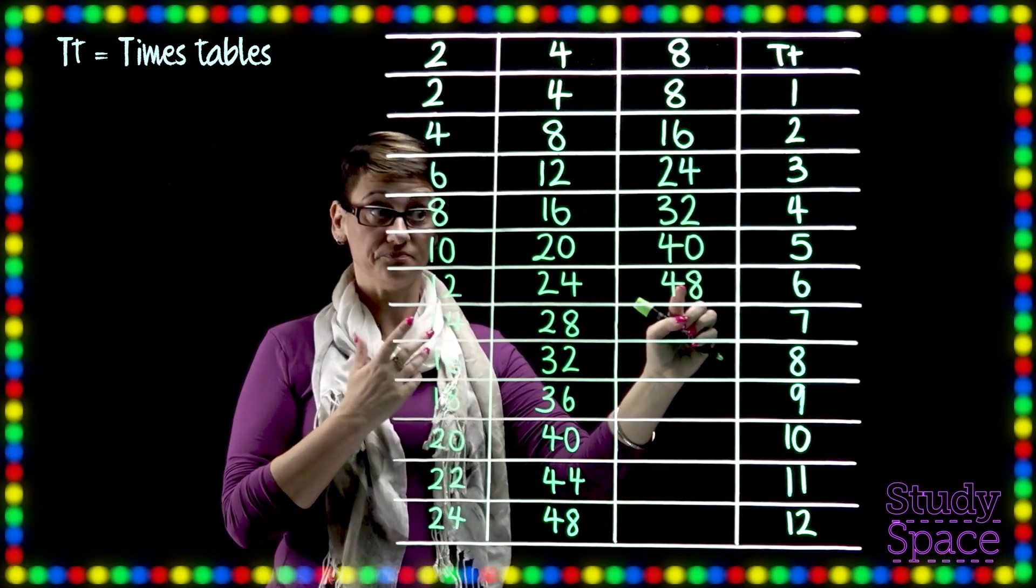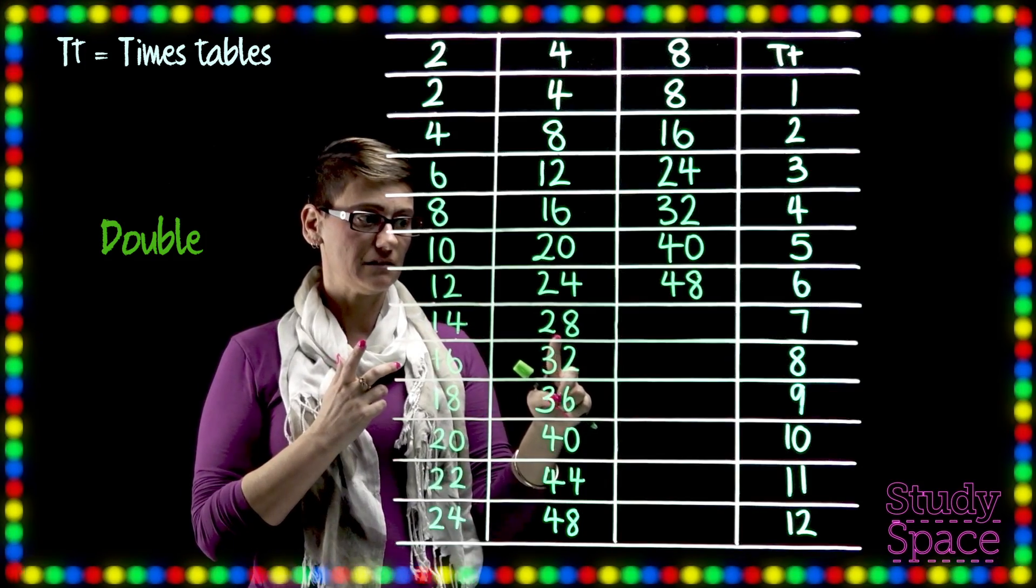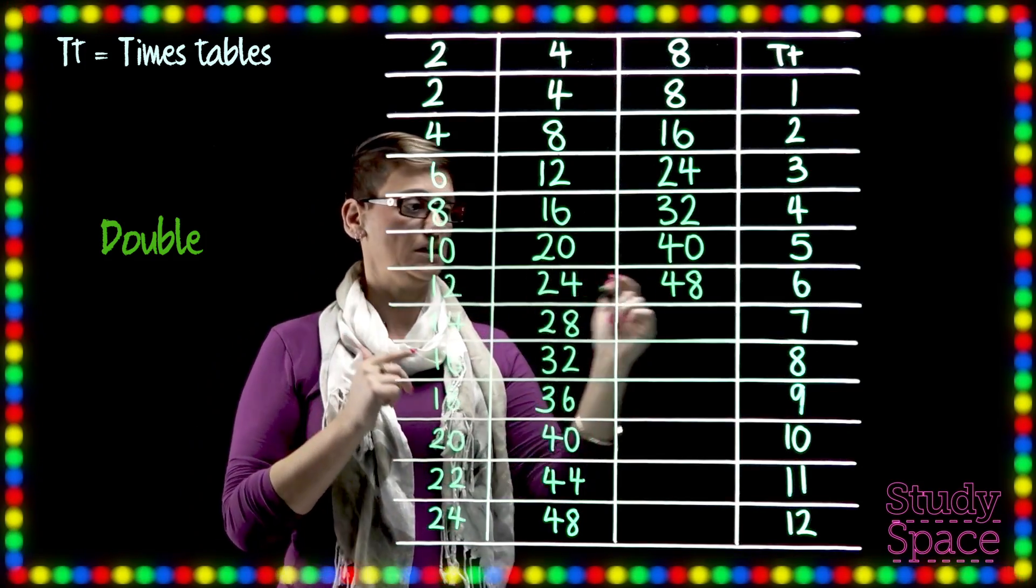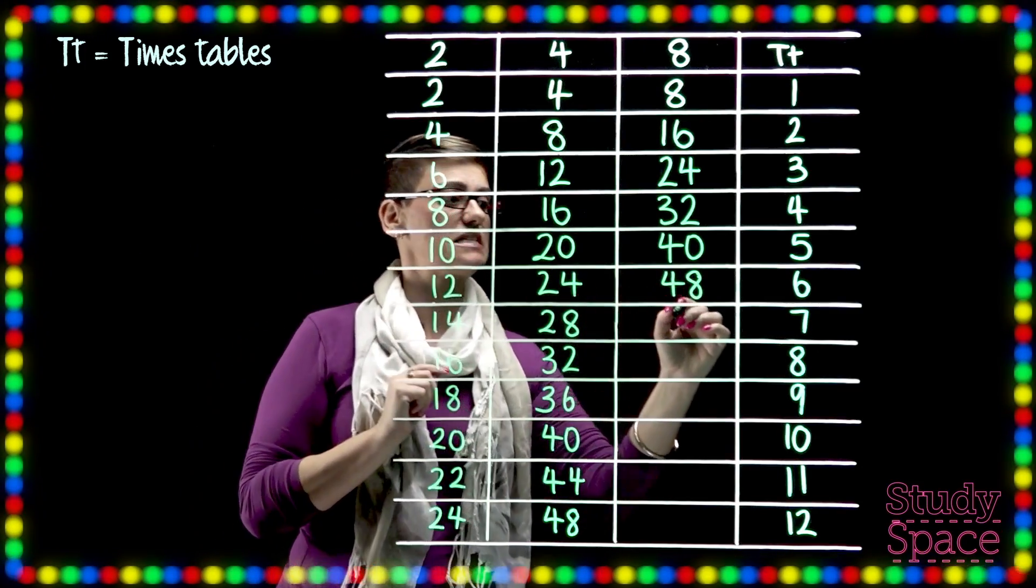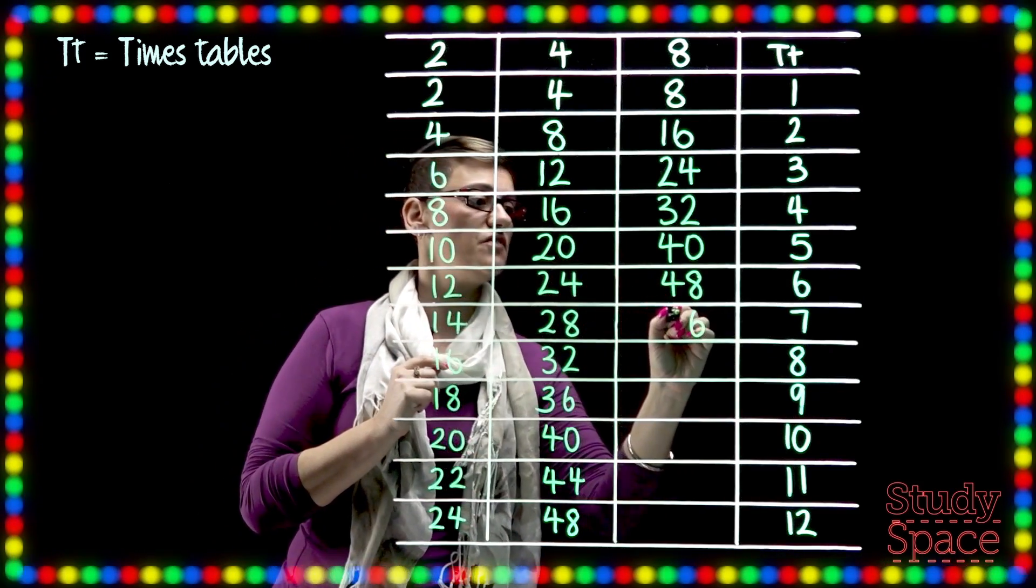Okay so now double 24 is 48. And again we've added 8. Double 28. I need to do this one. So 2 8's is 16. So we write the 6. Plus 2 plus 1 more is 5. So 56.